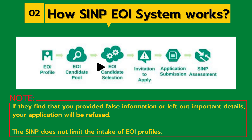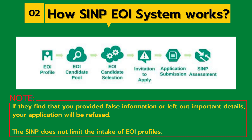At the third step, SINP conducts a draw to choose EOI profiles from the pool and the highest-ranked candidates will be invited to apply to SINP. At the fourth step, SINP will communicate with you by email about your Invitation to Apply. At the fifth step, if invited to apply, you can use the same login information you created for your EOI to upload required documents. At the sixth step, after submission of your ITA, it goes to SINP assessment and you will be notified via the same portal if any further documents are needed or any decision is made.